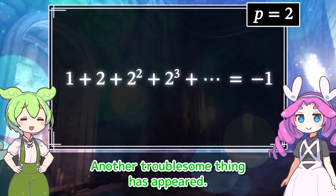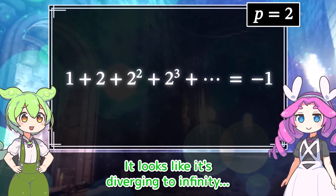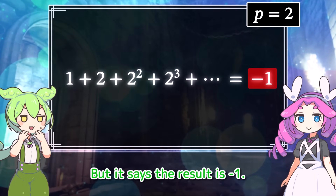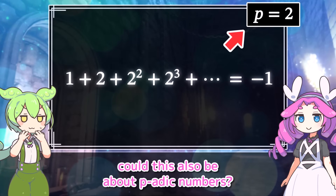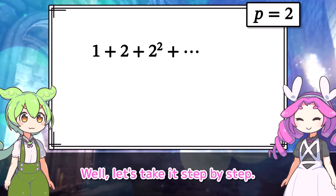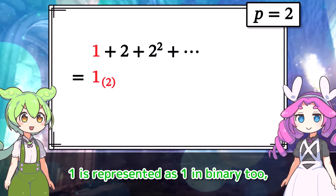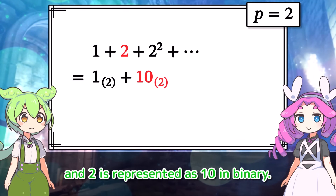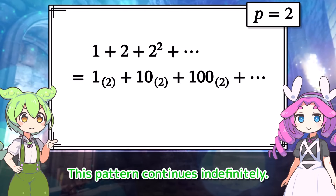Okay, another troublesome thing has appeared. Powers of two are being added up infinitely. It looks like it's diverging to infinity, but it says the result is negative one. This is fascinating. Since it says P equals 2, could this also be about P-adic numbers? Well, let's take it step by step. In this infinite sum, how would we represent the powers of two in binary? 1 is represented as 1 in binary, 2 is represented as 10, and 2 squared is represented as 100. This pattern continues indefinitely.